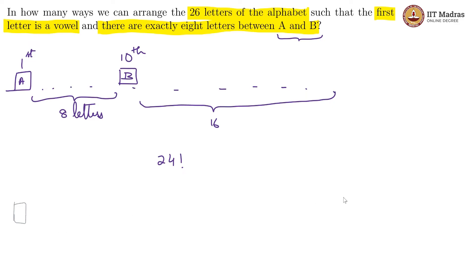And we also know that if the last letter is B, then A has to be, so if this is the 26th, then A has to be the 17th letter, so as to accommodate 8 letters in between, which means A can go anywhere from the second position to the 17th position.